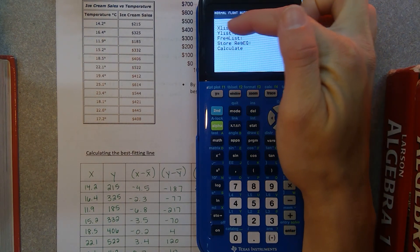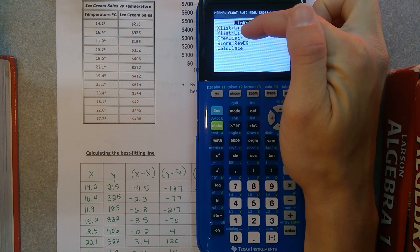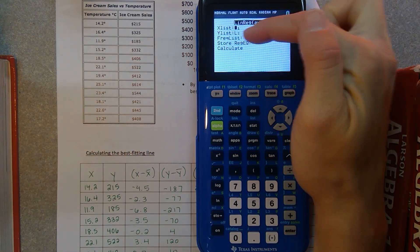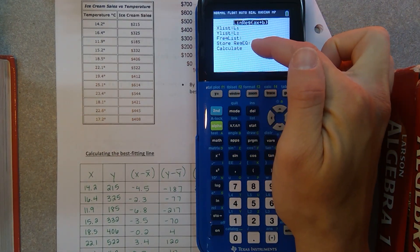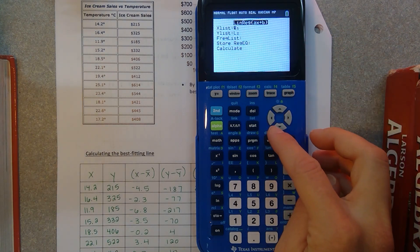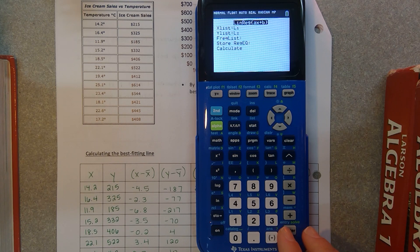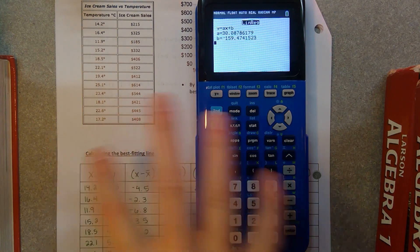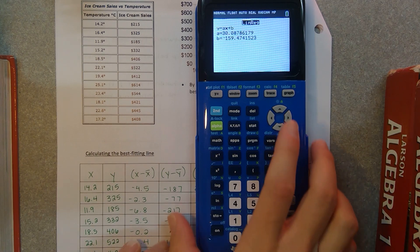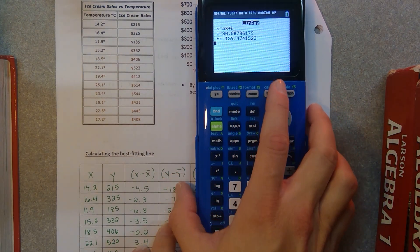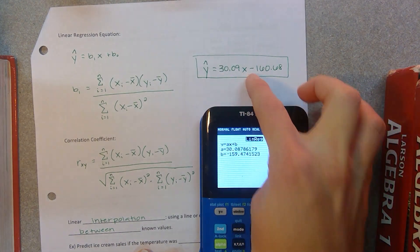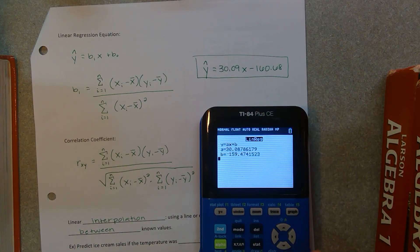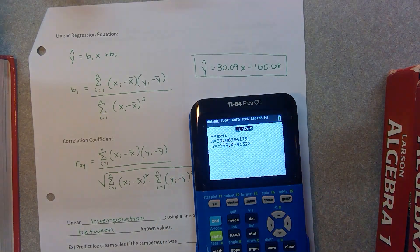Basically it's saying what is my X variable? Where are you pulling your X variables from? Well, list 1. That's where we just entered our temperatures. The Y list is list 2. That's where we just entered our ice cream sales. Frequency list, don't worry about that. Store Reg EQ, I'll go over that in a minute. And then calculate. So you want to scroll all the way down to calculate. And then your calculator basically just does this whole entire chart for you. And notice it said that our slope, 30.087, and then our Y intercept, negative 159.47. This is what we calculated. So we rounded a little bit and our numbers are a little bit off. But your calculator did not round. So this is the more precise answer. And it also did it in a snap. We had to calculate, calculate, calculate. So that's kind of a really cool option that your calculator does.